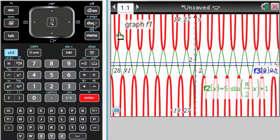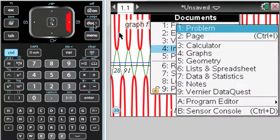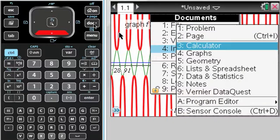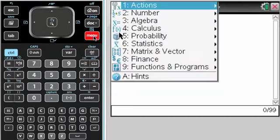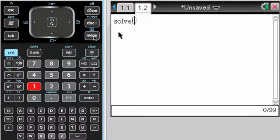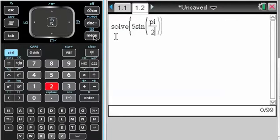So the way we'll do that is we're going to insert a calculator page, and we're going to go menu, 3, 1, and then 5 sine pi over 2x plus 1 equals 1, comma x.